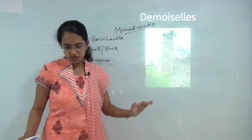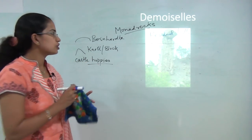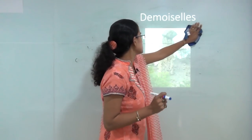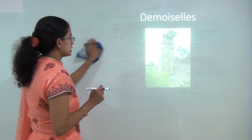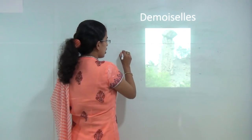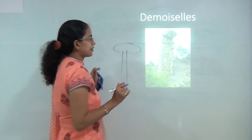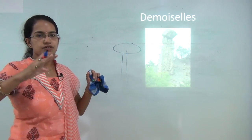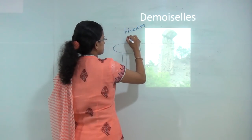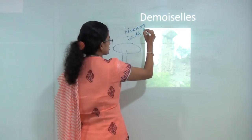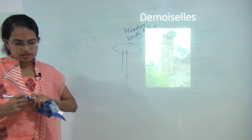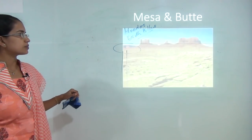Demoiselles are also known as earth pillars or hoodoos. Similar in concept to mushroom rocks, you have a large portion of soft rock with a hard rock above it, appearing imbalanced. They appear as pillars on the earth's surface and are a common feature of desert topography.